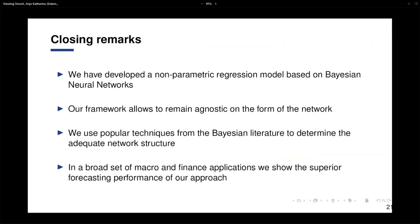To conclude: we developed a non-parametric regression model based on Bayesian neural networks. Our approach is flexible and allows remaining agnostic about the network structure, determining it within our MCMC loop using popular techniques from the Bayesian literature. We show in a broad set of macro and finance applications that we achieve superior forecasting performance. Thanks a lot, and I look forward to the discussion.